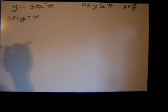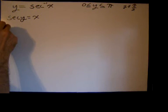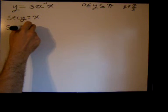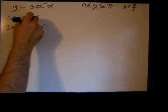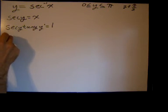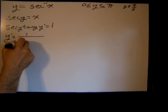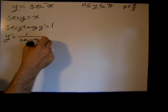Now we can differentiate with respect to x on both sides of the equation using implicit differentiation. The derivative of secant of y with respect to x is secant of y times tangent of y times y′, and that equals 1. So solving for y′, we get 1 over secant of y times tangent of y.